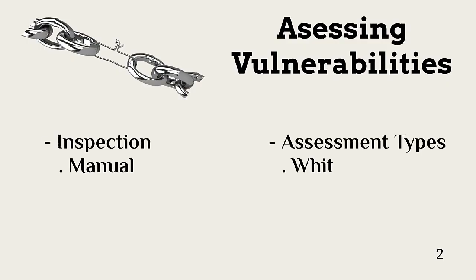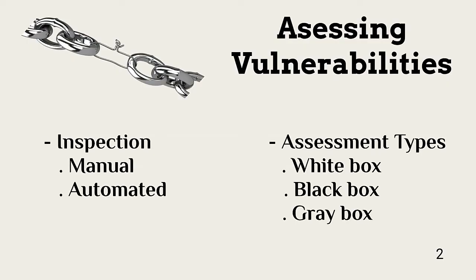Vulnerabilities should be discovered and managed by an organization and its vendors before attackers discover them. This is done by inspection and testing. Teams can inspect potential targets either manually or automatically. In both cases, systems are analyzed looking for known weaknesses in design, coding, and configuration.